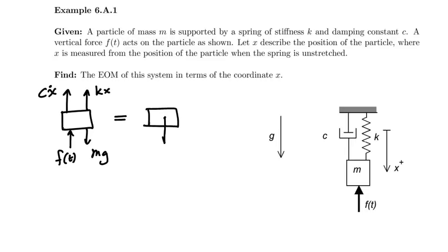Now the mass times acceleration will be downward positive because the x coordinate is defined to be downward positive, and will be given by not just ma, but actually m times x double dot because we know x double dot will be the acceleration of the block.